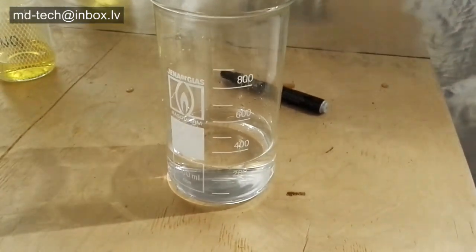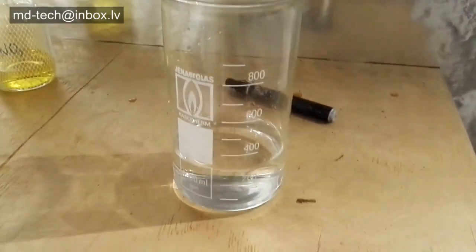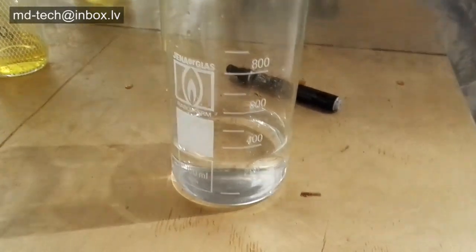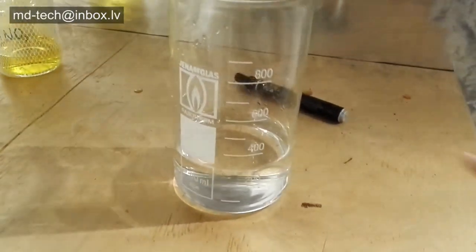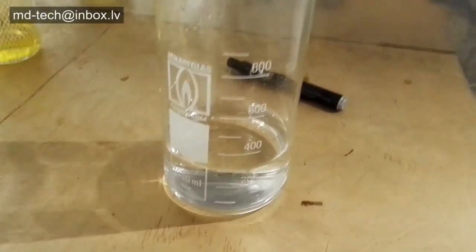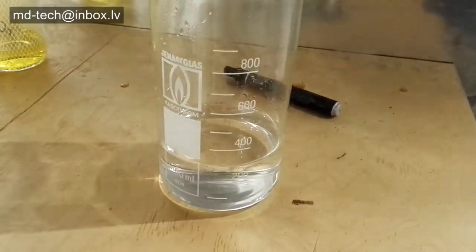Today we will learn how to distill sulfuric acid. We take the usual battery electrolyte with density 1.27, it has a sulfuric acid concentration of 32%.